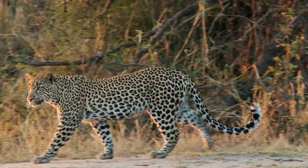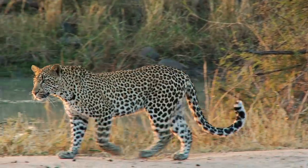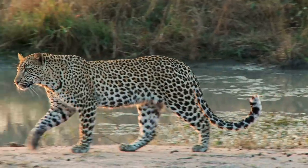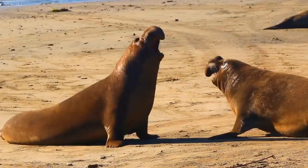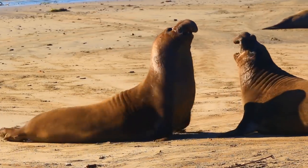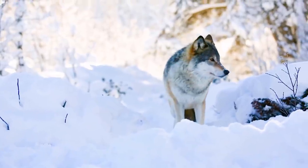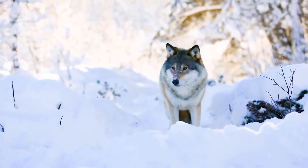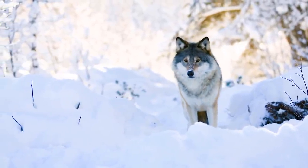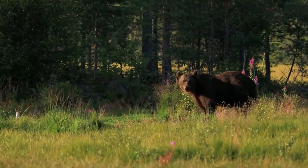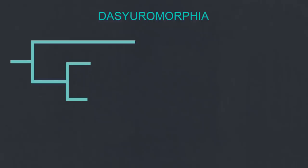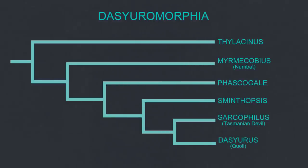Despite the large diversity of predatory placental mammals across most of the globe, the majority come from the same group — the carnivorans — which contains cats, dogs, bears, and seals, among many others. The animal most likely to adapt and fill a new niche will already be occupying a similar one. Australia is similar in this respect: nearly all diverse predatory marsupials descended from the same group, called the Dasyeuromorphia, which contains animals like quolls and Tasmanian devils.